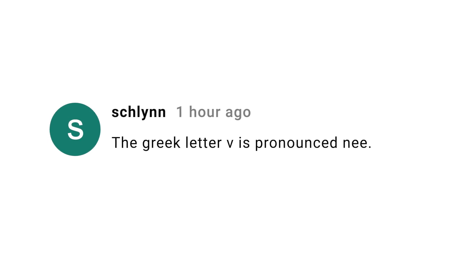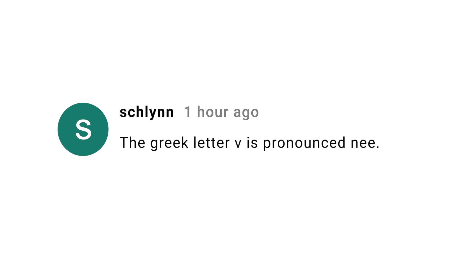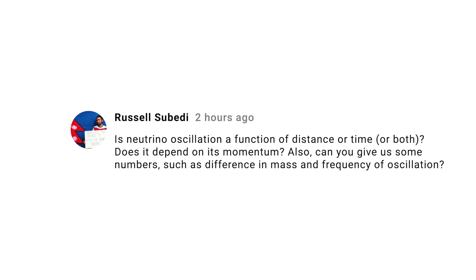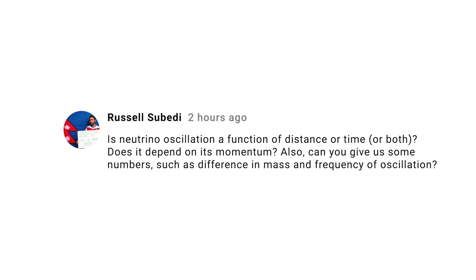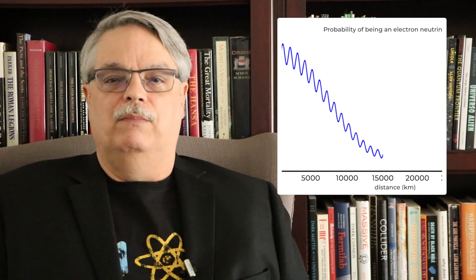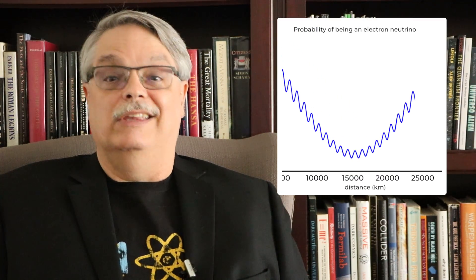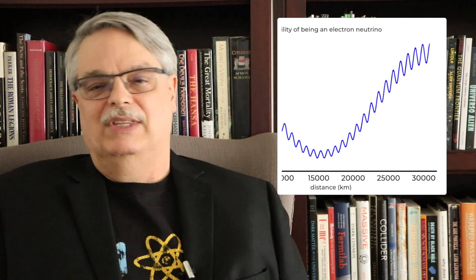Schlin properly points out that the correct pronunciation of the thirteenth letter of the Greek alphabet is 'ni.' Well, that's news to me. Schlin is right, but it's certainly pronounced 'new' by scientists in this context — even the Greek ones I know. Hey, I don't make the rules. Russell Sabeti asks for a function that characterizes neutrino oscillation and what parameters are relevant. That's a big question. Wikipedia is a pretty good reference, but if you want to make plots, I recommend a Wolfram Alpha demo — I'll put the links in the description, and the good thing is that the demo is totally free.